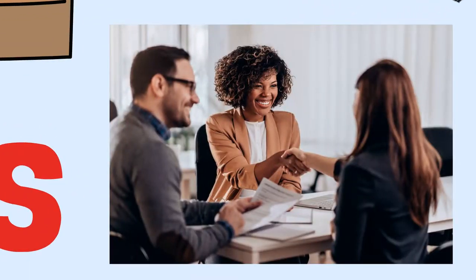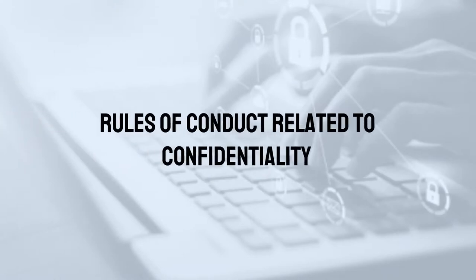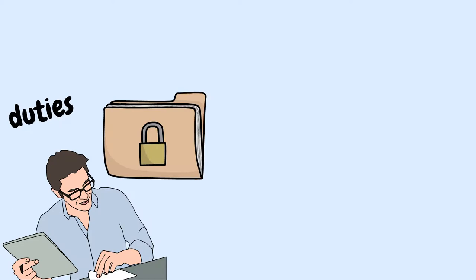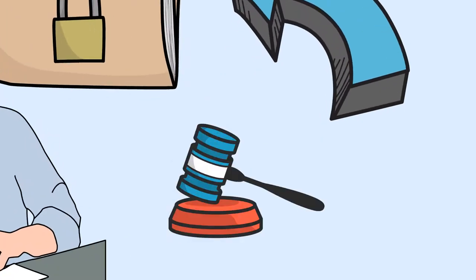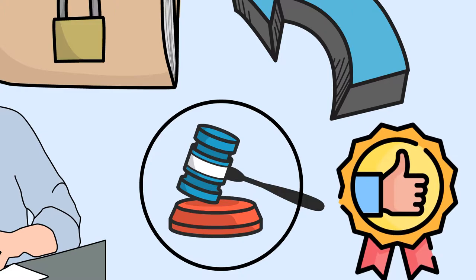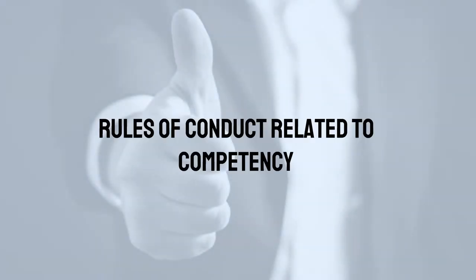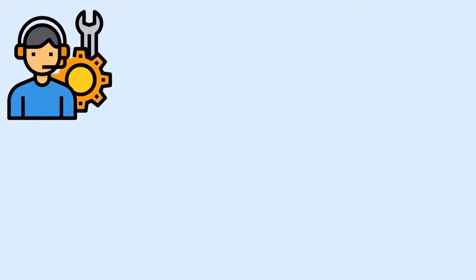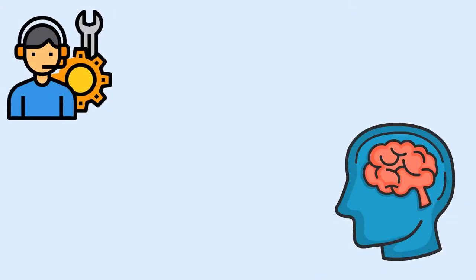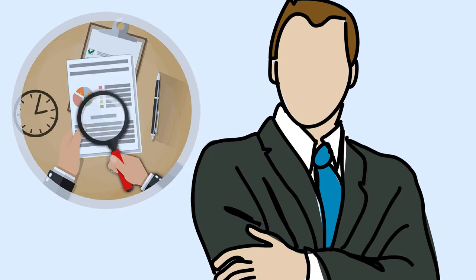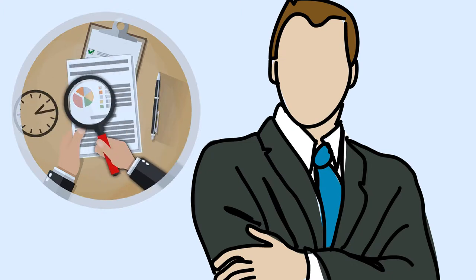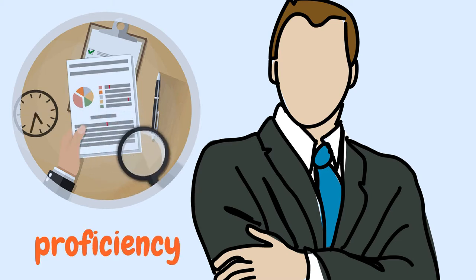Rules of conduct related to confidentiality. Internal auditors shall be prudent in the use and protection of information acquired in the course of their duties. They shall not use the information for any personal gain or in any manner that would be contrary to the law or detrimental to the legitimate and ethical objectives of the organization. Rules of conduct related to competency. Internal auditors shall engage only in those services for which they have the necessary knowledge, skills and experience. They shall perform internal auditing services following the International Standards for the Professional Practice of Internal Auditing, and shall continually improve their proficiency and the effectiveness and quality of their services.